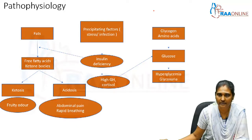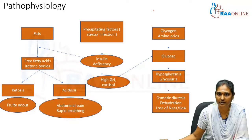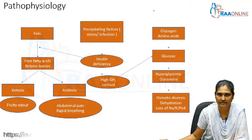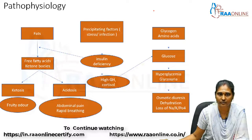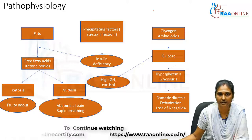Glycosuria in turn causes osmotic diuresis, resulting in polyuria and dehydration, along with loss of electrolytes such as sodium, potassium, and phosphate in the urine. This is the pathophysiology behind diabetic ketoacidosis.